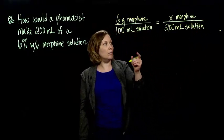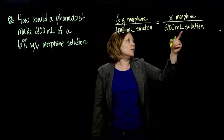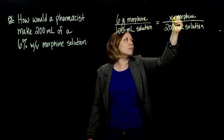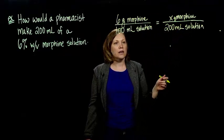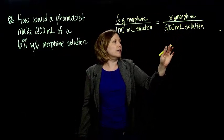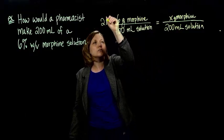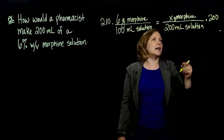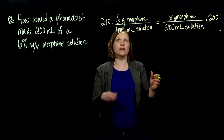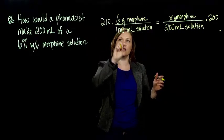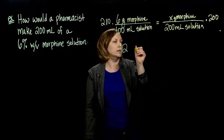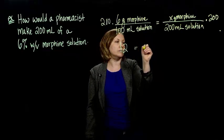Solve this, multiply. If you look, the milliliter solution is going to cancel, the morphine is going to cancel. If we have put grams here, the grams will cancel. But either way, it will work out the way we need it to. Multiply by 200 on both sides, everything will cancel out except the 200 times 6 divided by 100, which boils down to 12 is our X.